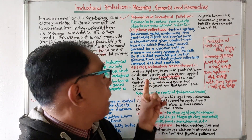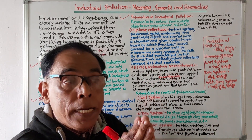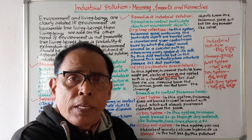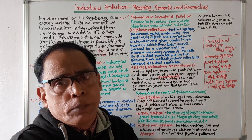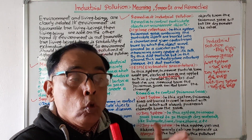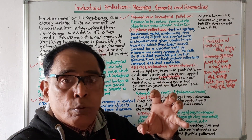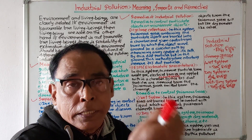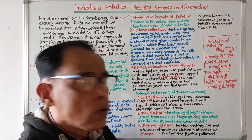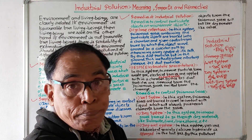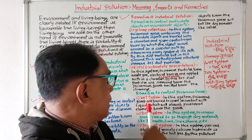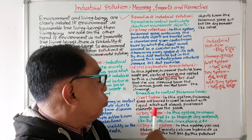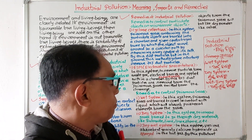Cyclone collectors and ESPs are meant to remove dust particles from the poisonous gases emitted from chimneys. Now, in order to remove pollutants from gases, three methods are applied. One is the wet system, one is the dry system, and one is the dry-wet system.